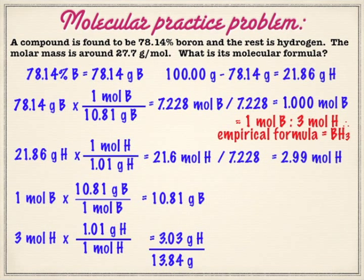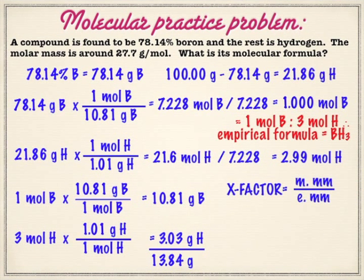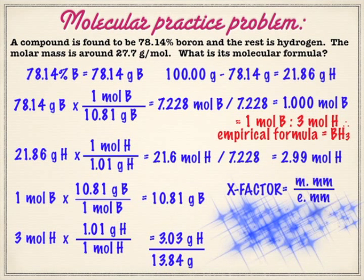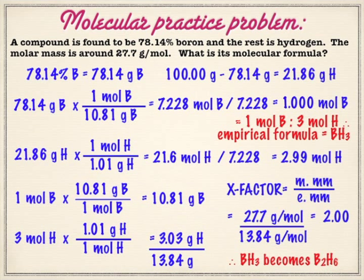Obviously 13 does not match 27.7, so we find our x-factor. How many times does 13 go into 27? The answer is 2. So the x-factor is 2, which means it's no longer BH3 — it would be B2H6. And that's it.